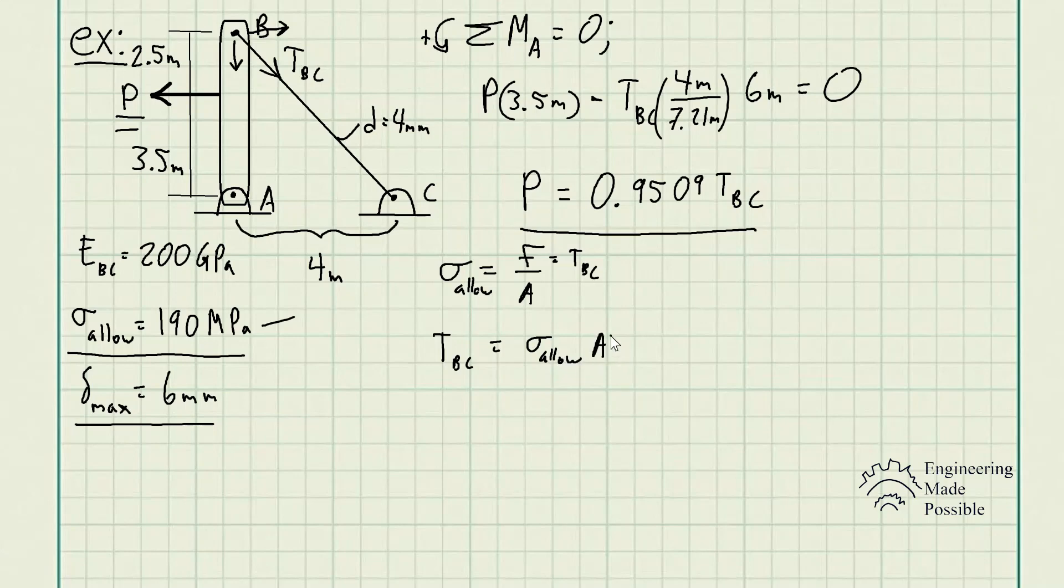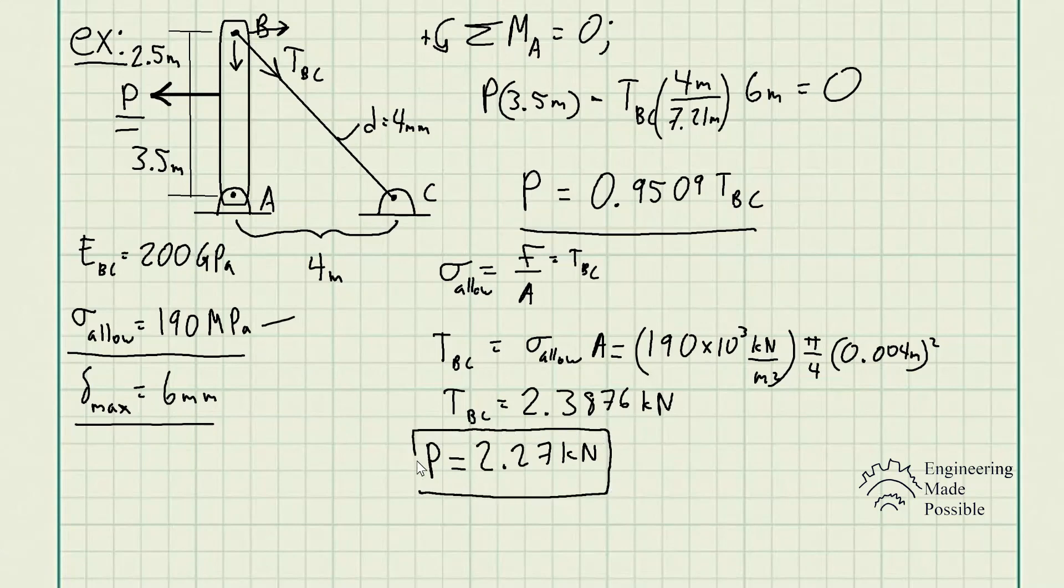This gives us the maximum tension of the cable BC equal to 2.3876 kilonewtons. Solving for the maximum external load to be applied onto this structure, just multiply it by 0.9509, we get 2.27 kilonewtons. This is the maximum external force that we could apply to this structure such that we do not exceed the allowable stress.